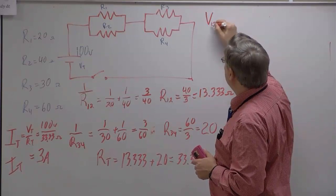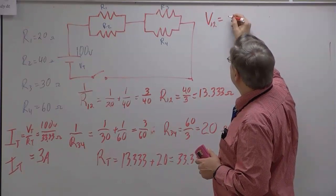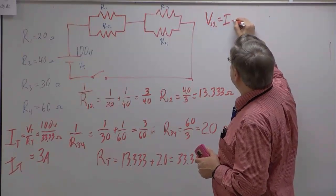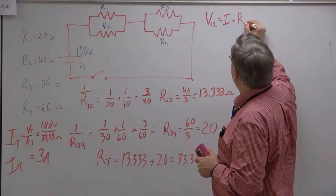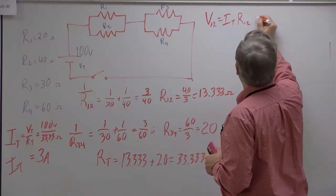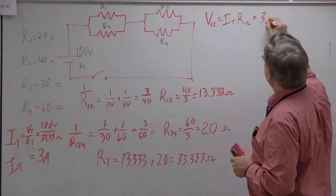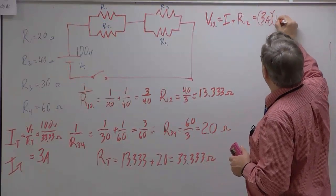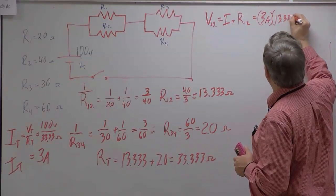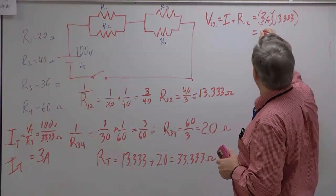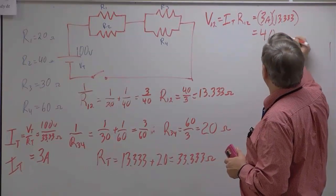So V12 is equal to IT times R12, which means it's equal to 3 amps times 13.333, which is equal to 40 volts.